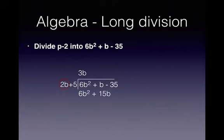Okay, change the sign on the bottom line and add. And we do that vertically. So 6b squared minus 6b squared, they're gone. So 6b squared plus 1b minus 15b is minus 14b and then bring down the minus 35.